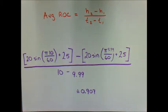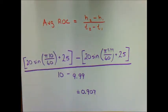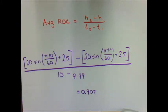Part c asks: what physical quantity does this instantaneous rate of change represent? We're talking about height changing with respect to time, and a rate of change always has to do with velocity or speed. In this case we're talking about height, so we can safely say that the instantaneous rate of change represents the vertical speed of the car at t equals 10 seconds.